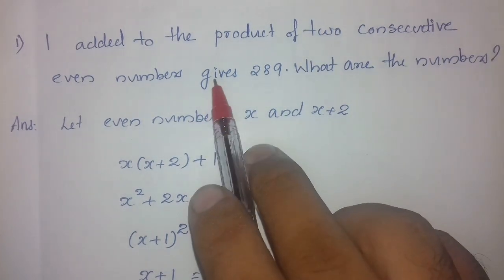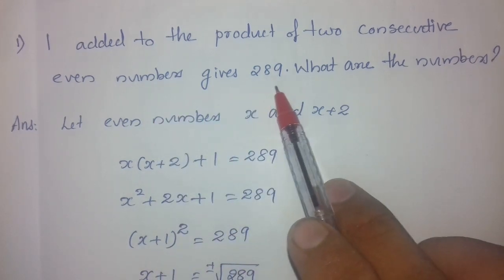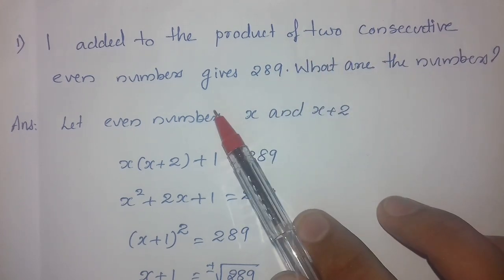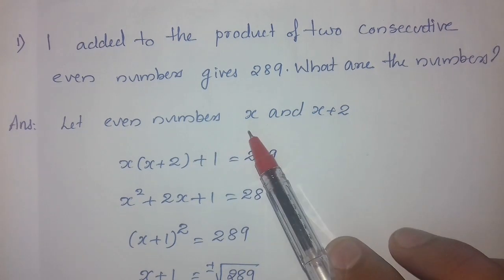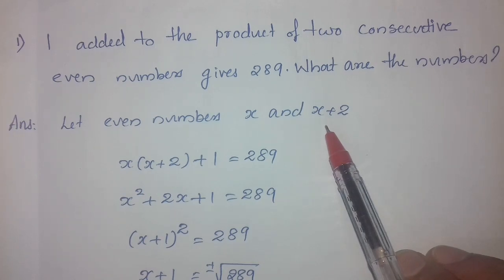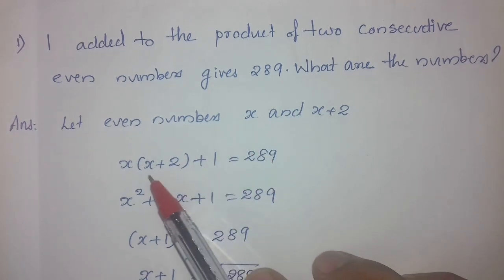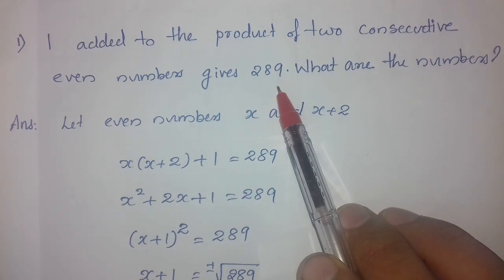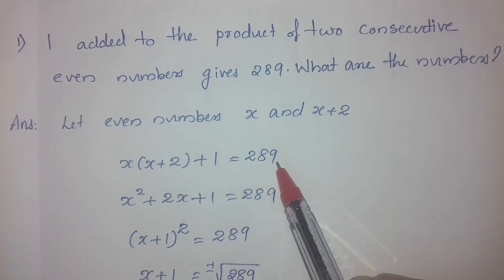Next problem: 1 added to the product of 2 consecutive even numbers gives 289. What are the numbers? Let the consecutive even numbers be x and x plus 2. Their product plus 1 equals 289, so the equation is x into x plus 2, plus 1 is equal to 289.